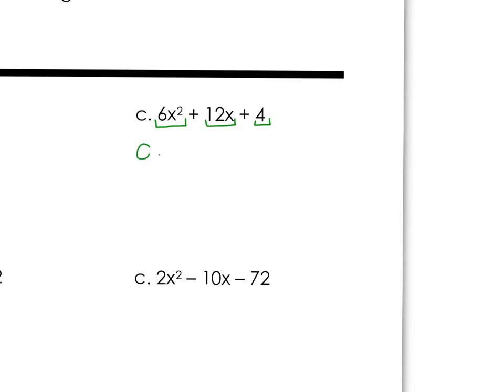So if I take 2 out of all of those terms and put it out in front, 2 into 6x² is 3x², because all three terms don't have an x as part of that common factor. And then it's plus again.